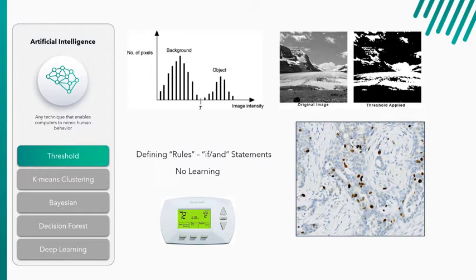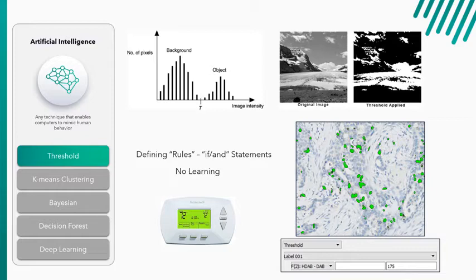So essentially it's the old thermostat. What temperature do you want? And we'll deliver when we hit that rule set. So in this image on the right, you can see we have these positive nuclei, and we just want to tag those pixels that have a certain intensity of brown. So we set a threshold, everything up to 175, and it tags those pixels seen here in green in the following way. And then we can add post-processing steps to clean it up a bit if we want, but simple.